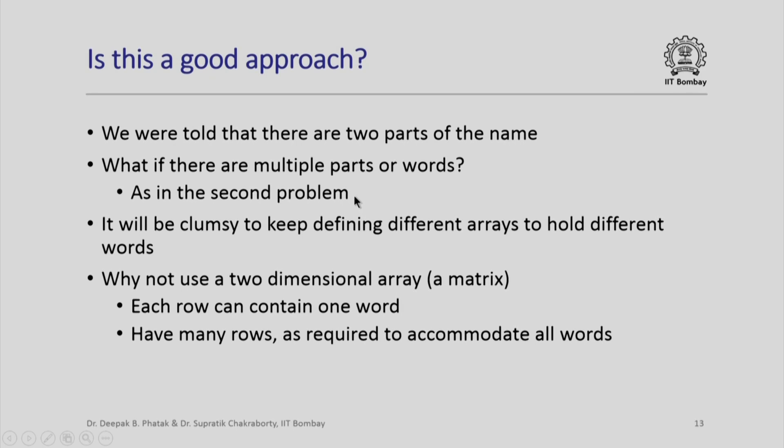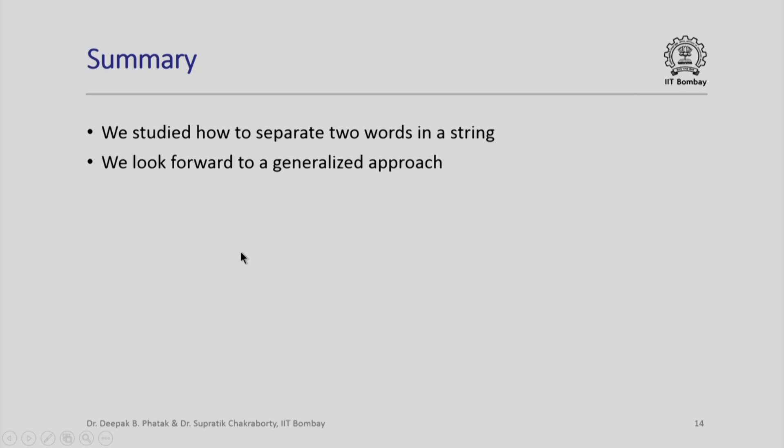You remember the second problem says: given a sentence containing multiple words separated by one or more spaces, get them out into separate arrays or separate strings. Now it will be very clumsy to keep defining different arrays to hold different words. Why not use a two-dimensional array or a matrix where each row can contain one word and the matrix will have many rows, as many as are required to accommodate all words. We shall see this particular approach in another session.